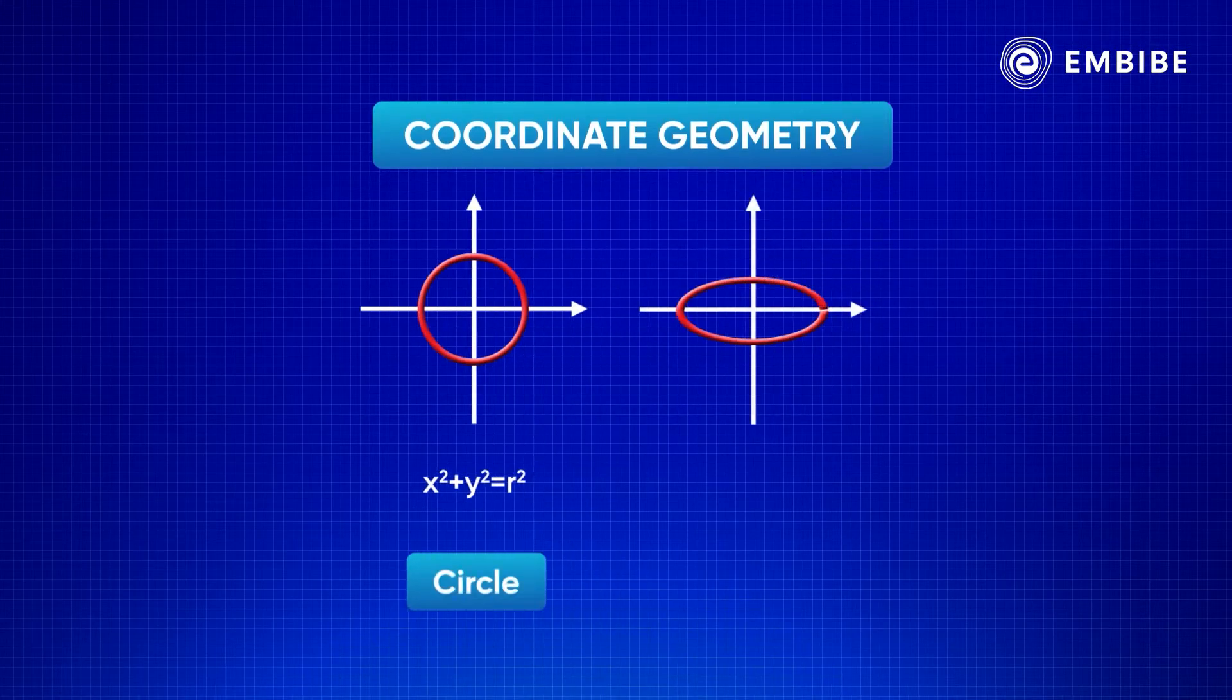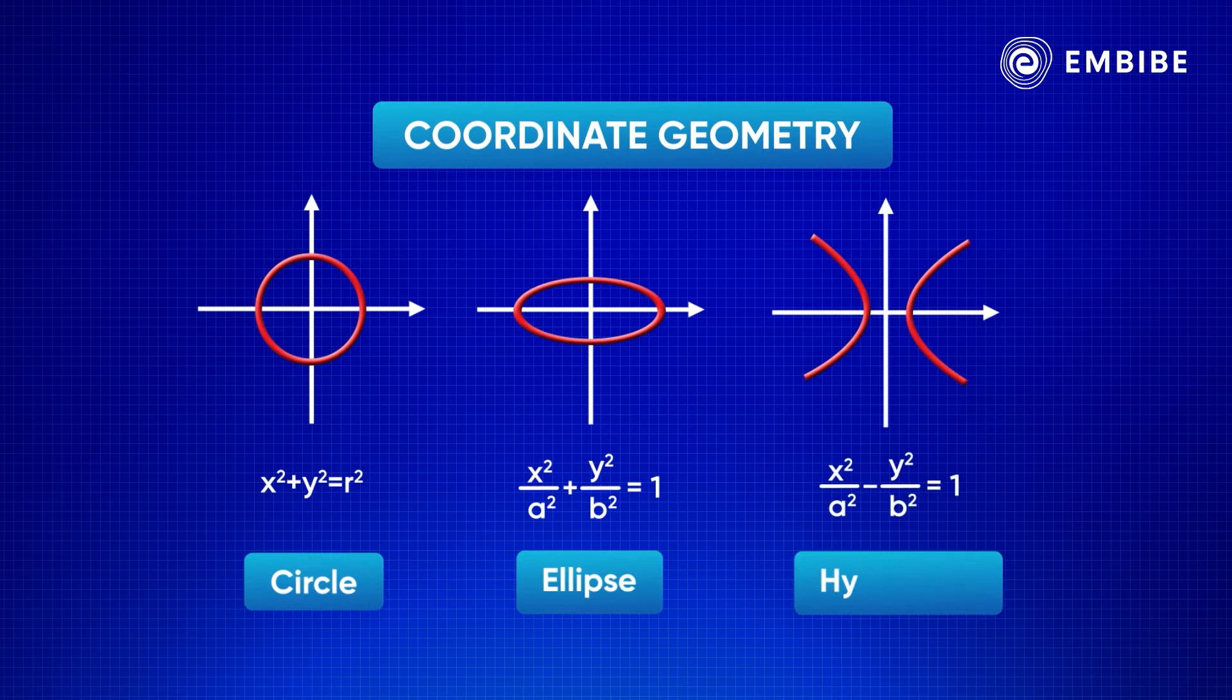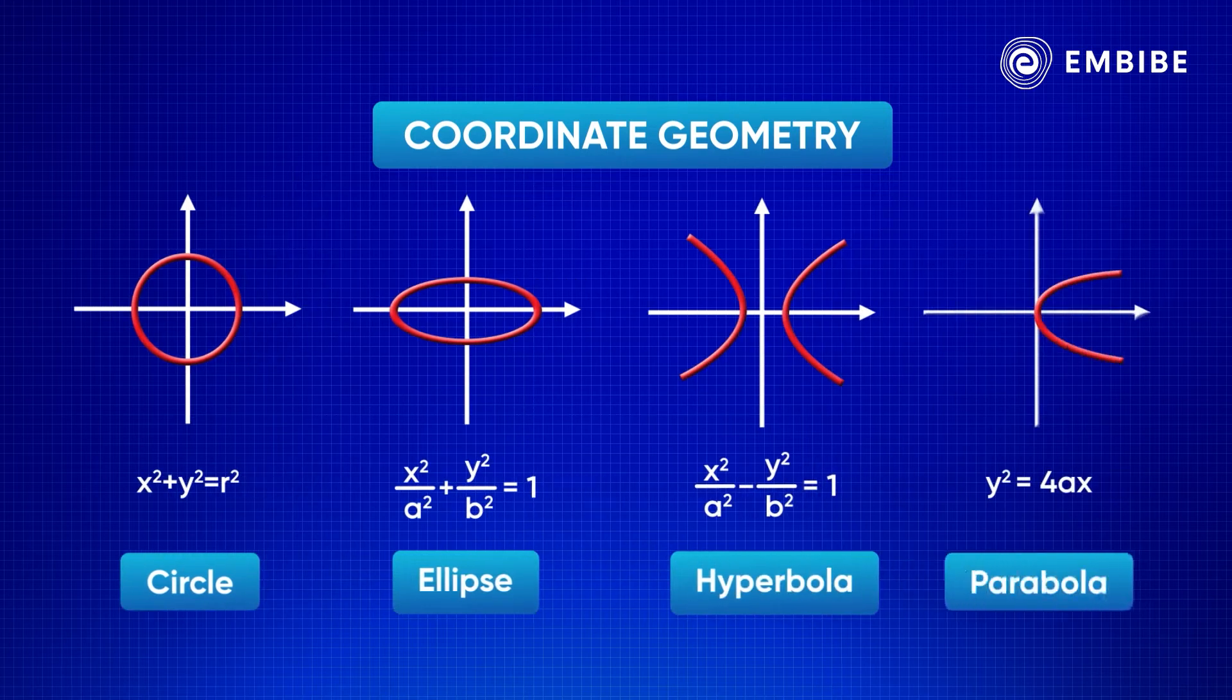In coordinate geometry, for the equation of tangent in point form, it's T_p equals 0, which applies to circle, ellipse, hyperbola, and parabola. How convenient is that?